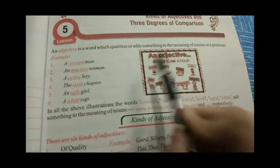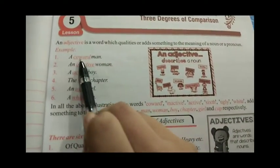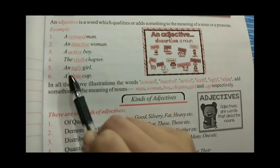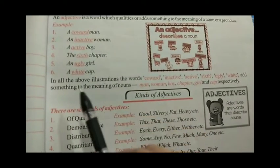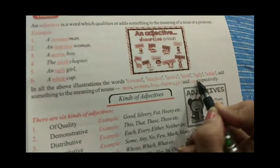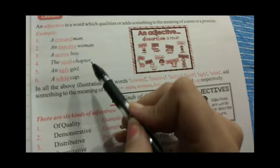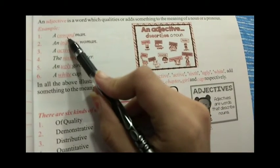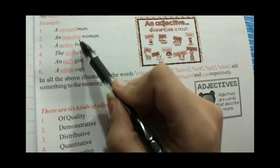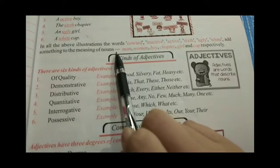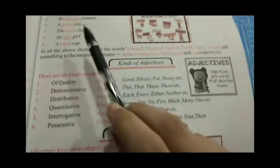Adjectives are words which describe a noun. For example: a coward man, an inactive woman, an active boy, the sixth chapter, an ugly girl, a white cap. In all the above illustrations, the words coward, inactive, active, sixth, ugly, white — they are adding meaning to the nouns: man, woman, boy, chapter, girl, cap. So the words which describe nouns are called adjectives.